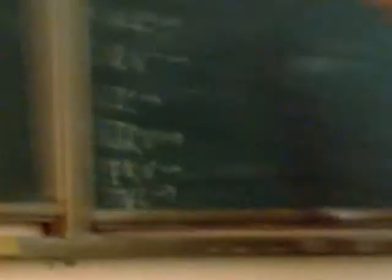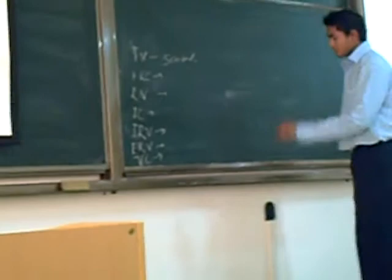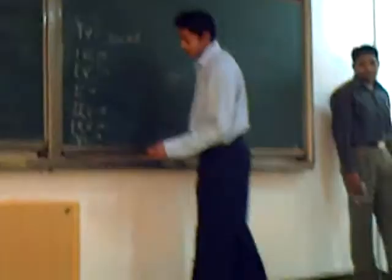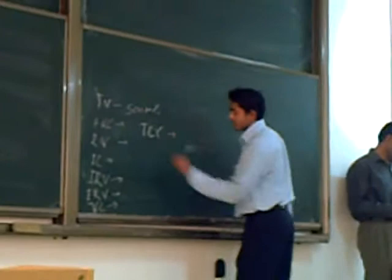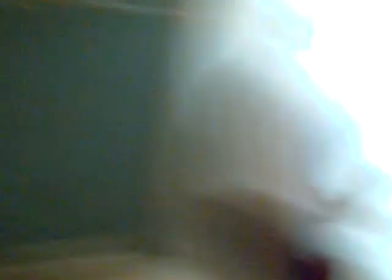Vital capacity is the maximum amount of air which can be expired after maximum inspiration. Total lung capacity is the amount of air in the lung after maximum inspiration. So these are all lung volumes.